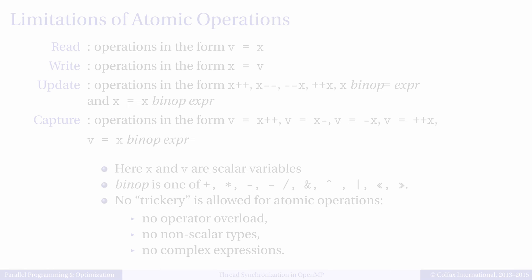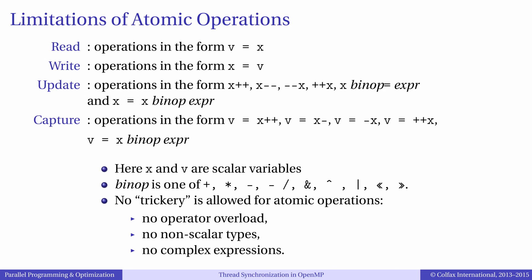The difference between critical sections and atomic operations is that atomics are applicable to only a single line of code that performs a read, write, update or capture operation on a single scalar variable. Operators that can be protected with atomics are assignments, increments, addition, multiplication, division and binary operations.